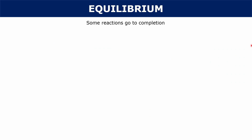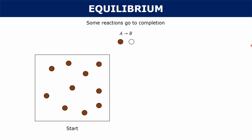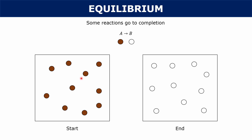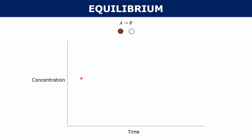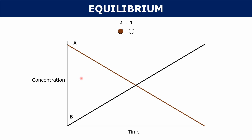The pretext for equilibrium is that some reactions are going to go to completion. If you had a reaction where A is reacting to produce B, at the start you might have a bunch of these brown A molecules, but at the end you have just all of these white product B molecules. If you were to graph the concentrations of A and B over time, A goes down at a linear rate and B goes up at a linear rate. At the end you have all B and no A.